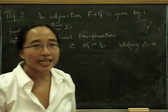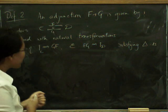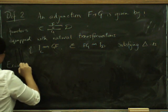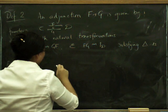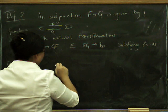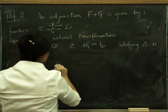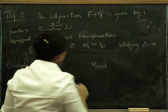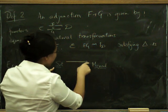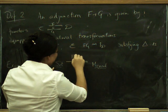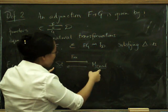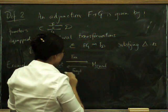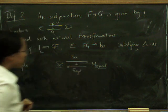I also haven't said what any examples of adjunctions are. Some very nice examples come from things we've been talking about already. For example, if you have the category of sets and the category of monoids, we know how to start with a set and make a free monoid on it — the free functor — and we know how to start with a monoid and forget that it was a monoid and just take its underlying set — the forgetful functor. It turns out that this is part of an adjunction.